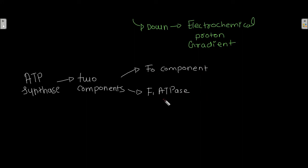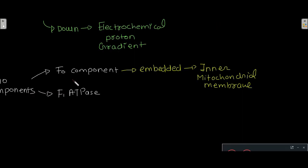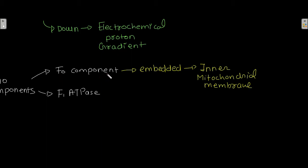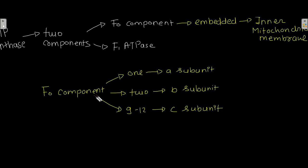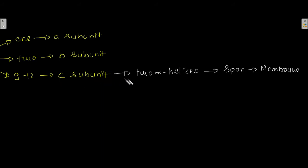The F0 component of ATP synthase is embedded in the inner mitochondrial membrane. The F0 component has one A subunit, two B subunits, and nine to twelve C subunits. The C subunit consists of two alpha helices that span the membrane.